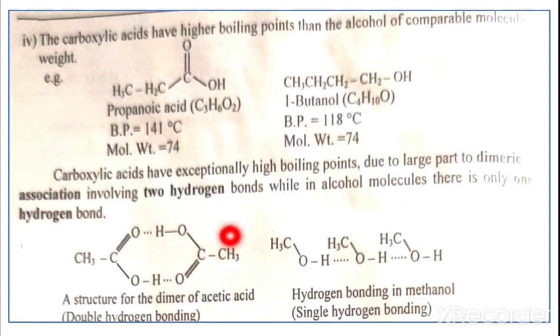This is the structure of carboxylic acids: CH3-C double bond O-H. The carboxylic acid forms dimeric association involving two hydrogen bonds. The dimer of acetic acid has double hydrogen bonding, with two hydrogen bonds formed.